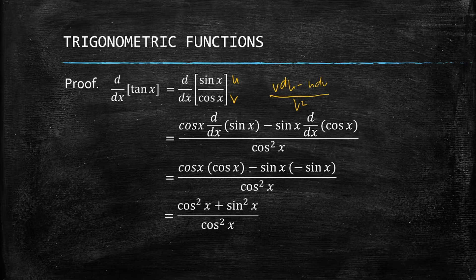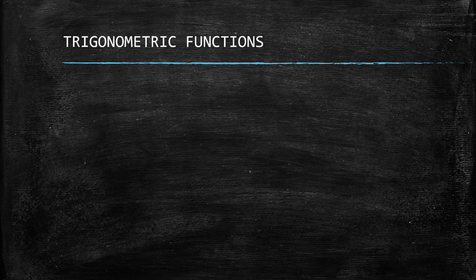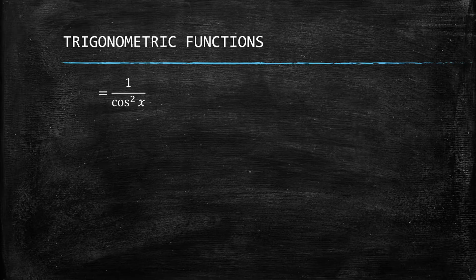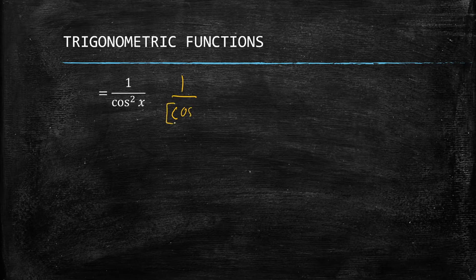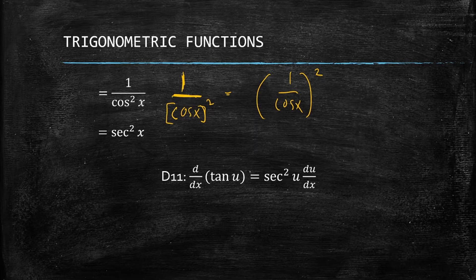Simplifying, we get cosine squared x plus sine squared x in the numerator. By the Pythagorean identity, sine squared x plus cosine squared x equals 1, so we have 1 over cosine squared x. We can rewrite this as (1 over cosine x) squared, and since 1 over cosine x is secant x, we get secant squared x. Generalizing, the derivative of tangent of u equals secant squared of u times du/dx.